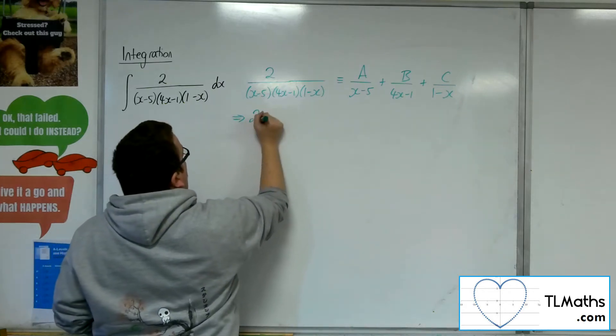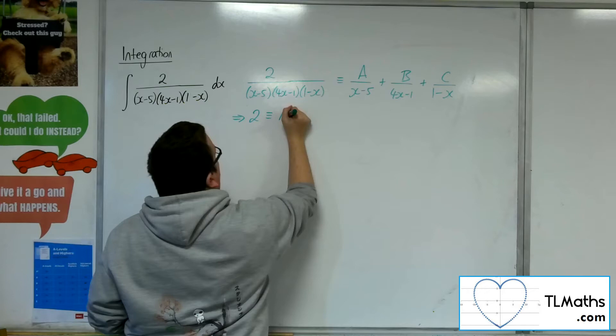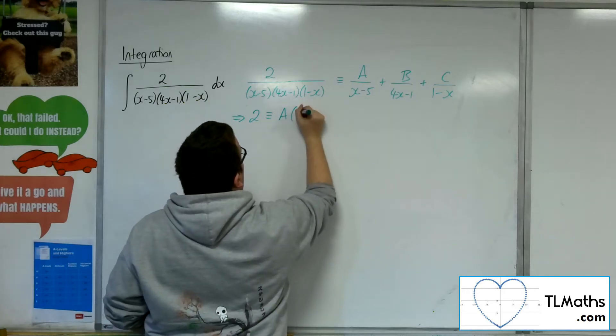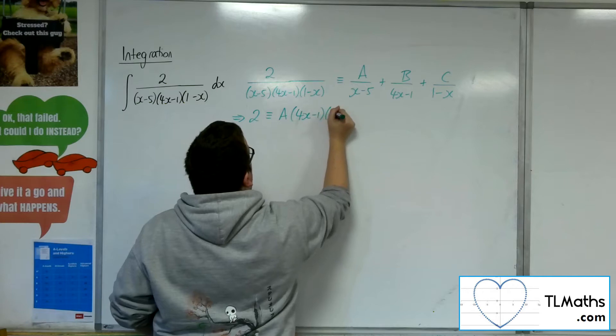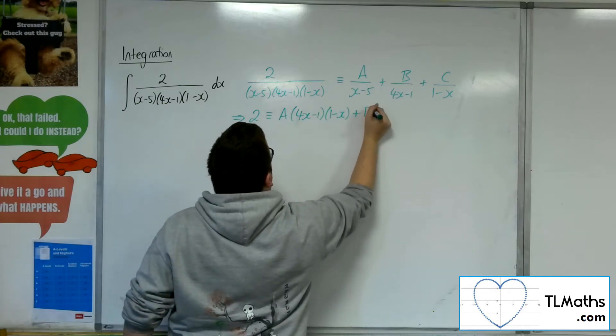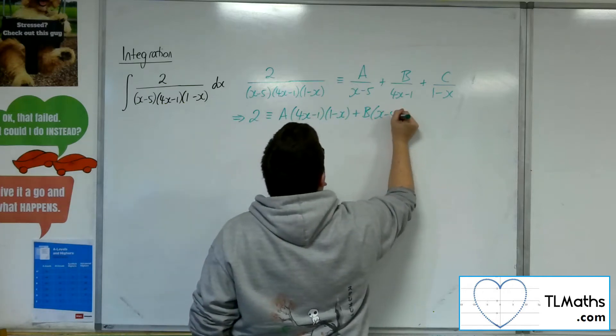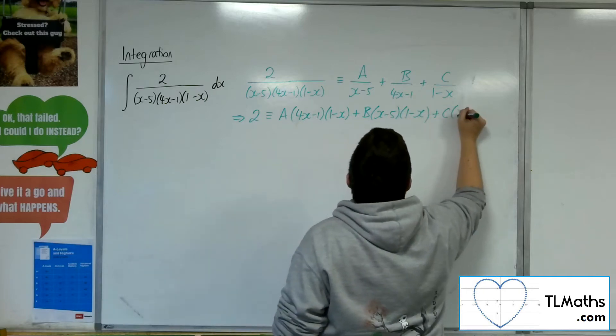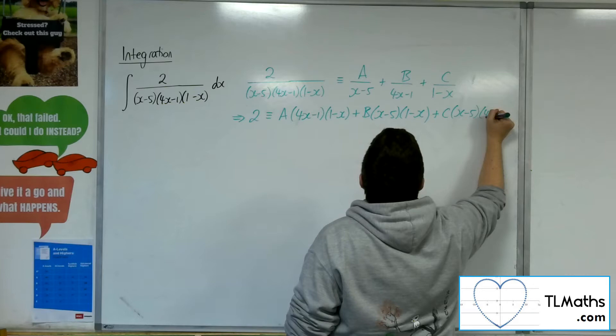So 2 equals A times (4x-1)(1-x) plus B times (x-5)(1-x) plus C times (x-5)(4x-1).